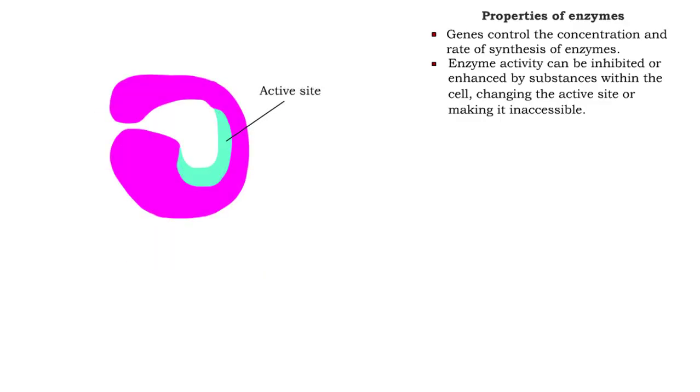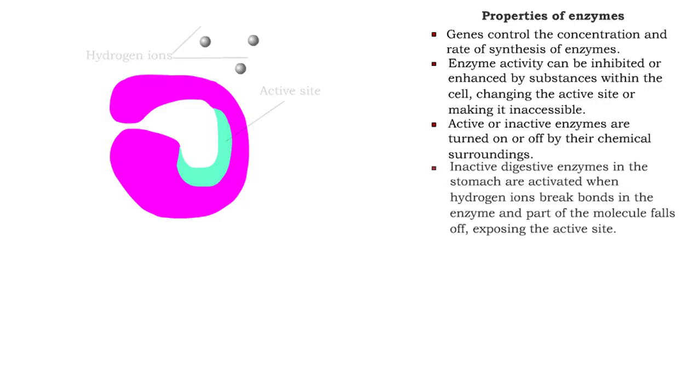Many enzymes exist in inactive forms and are turned on by their chemical surroundings. For example, digestive enzymes in the stomach are inactive until they contact the hydrogen ions there. The ions break some of the bonds in the enzyme and part of it falls off, exposing the active site.